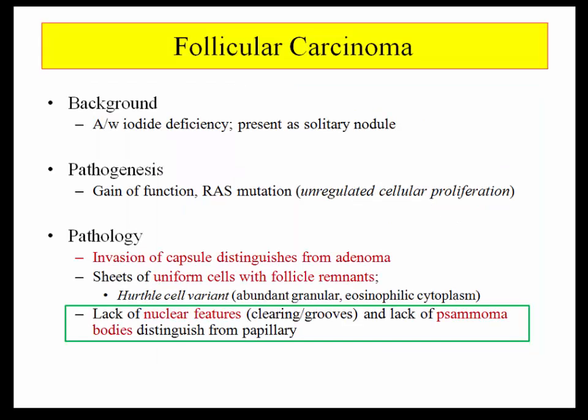Let's move on to follicular carcinoma. It is associated with iodide deficiency, and like an adenoma, presents as a solitary lesion. It is associated with a KRAS mutation, which is a gain-of-function mutation leading to unregulated cellular proliferation. As for the pathology, it is interesting in its relative normalcy: sheets of uniform cells with scant follicle remnants. The diagnostic feature is capsular invasion.